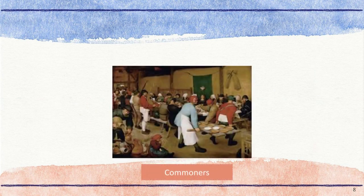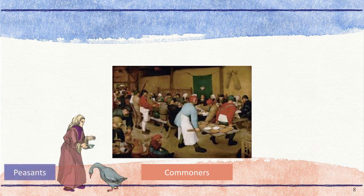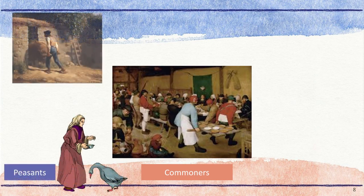Most members of society were commoners. There were two groups of commoners: peasants and serfs. Peasants owned little, if anything, and often spent long hours working and paid high rents to the nobles for their lands and homes. They had many different roles in feudal society, like blacksmiths and bakers. Many were farmers who provided food for the entire kingdom.